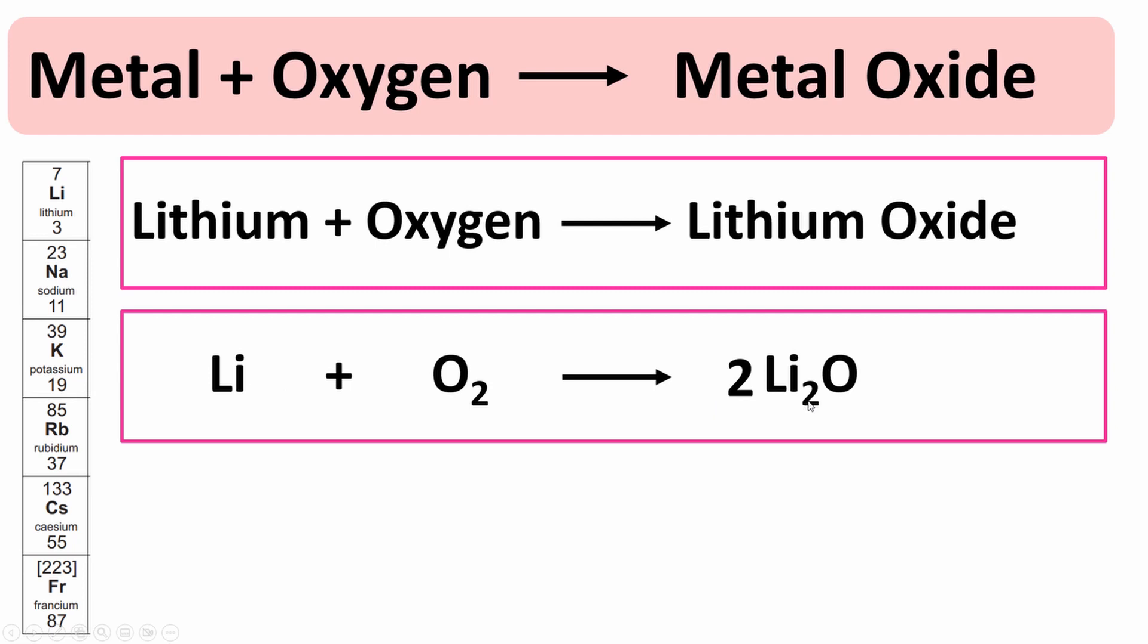However the lithium is not balanced. In total we have four lithium, so 2 times 2, but there's only one lithium atom here so we can put a 4 in front of there as well. So this is the balanced symbol equation for the reaction of lithium and oxygen to form lithium oxide.